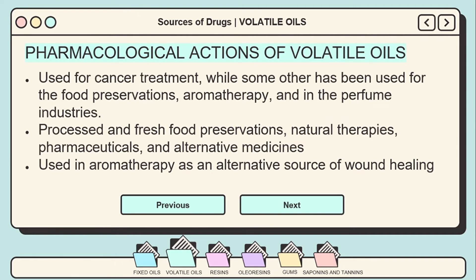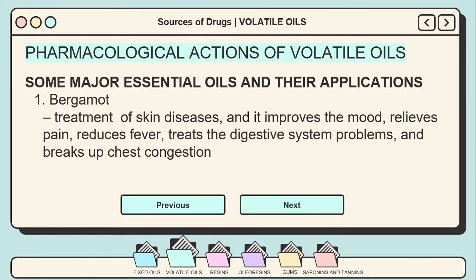Pharmacological actions of volatile oils include antibacterial, antioxidant, antiviral, insecticidal, and other biological properties. Some of these oils have been utilized in food preservation, aromatherapy, and the fragrance sector, while others have been used for cancer treatment. Their antibacterial and antioxidant properties underlie a wide range of uses including processed and fresh food preservation, natural remedies, pharmaceuticals, alternative medicine, and aromatherapy as a substitute for traditional wound treatment.